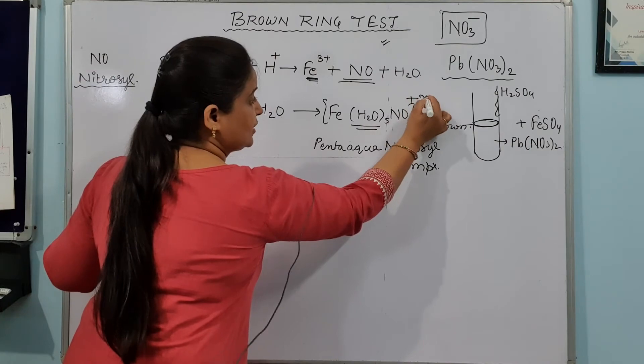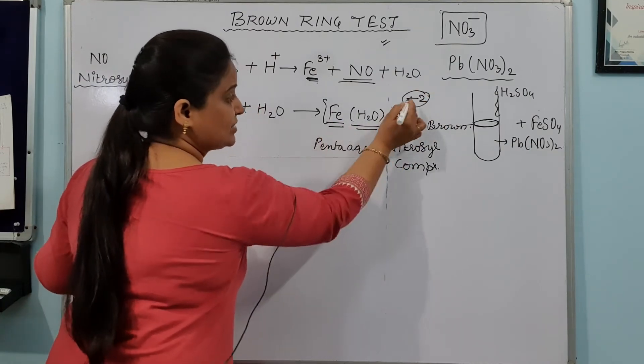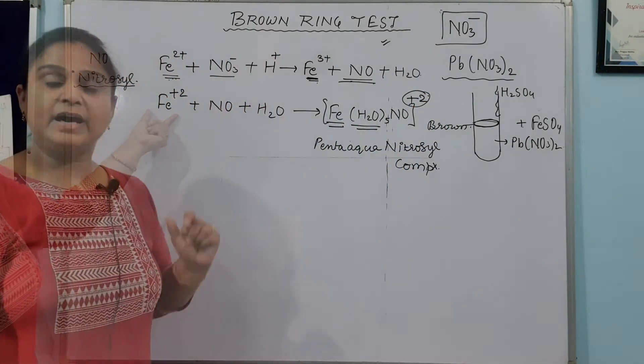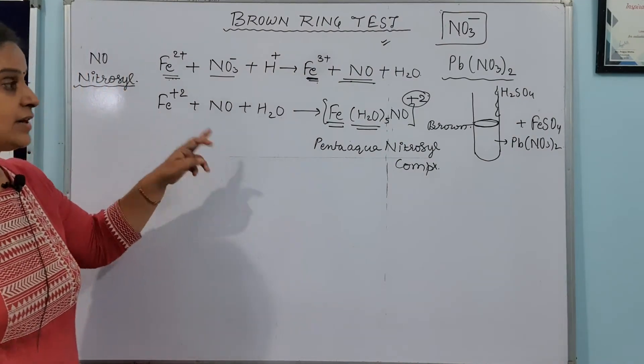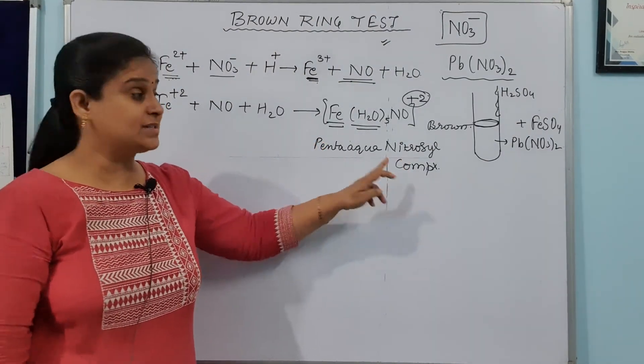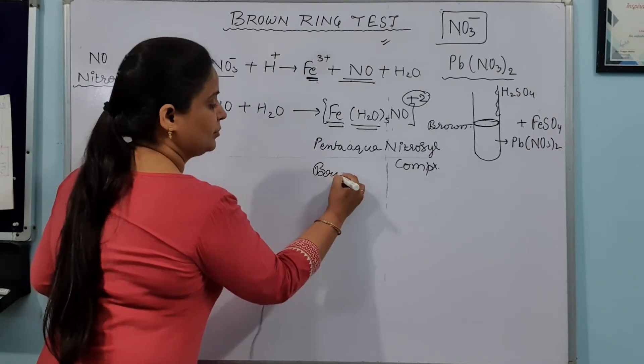Here the charge of the iron is +2. So iron's oxidation state doesn't change. Iron remains +2 only. So what is forming? Penta-aqua nitrosyl complex. And its color is brown.